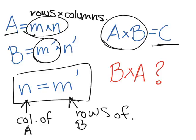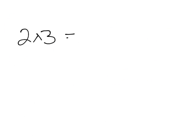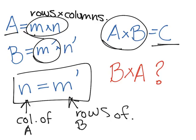When you multiply two numbers, for example two times three, you are used to seeing that it equals three times two. That's the commutative property of multiplication. So do you think the commutative property also holds for matrices? Well, it doesn't.